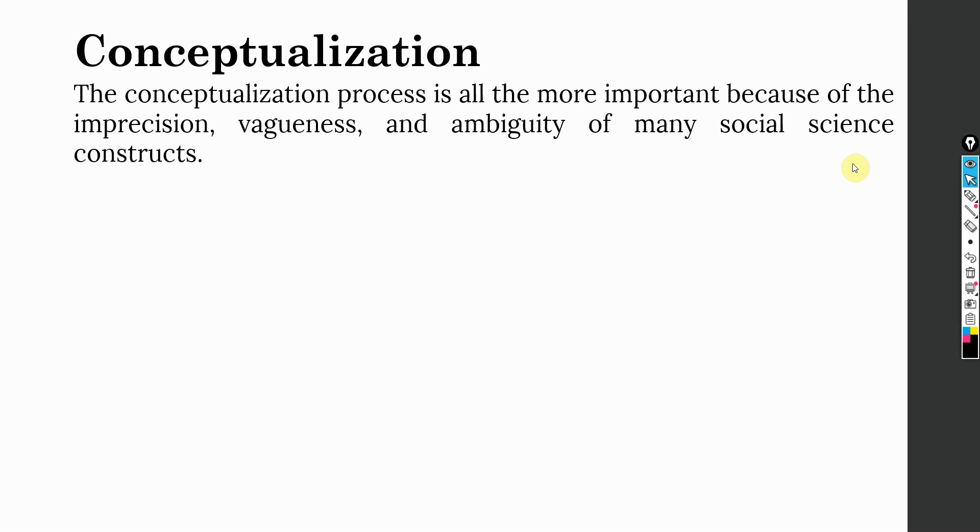The conceptualization process is all the more important because of the imprecision, vagueness, and ambiguity of many social science constructs. In social sciences, constructs sometimes overlap. The definitions are not yet clear—they are in developing stage or the conceptualization is yet to be cleared. That's why you first need to identify the boundaries of your construct and how you're going to conceptualize it.